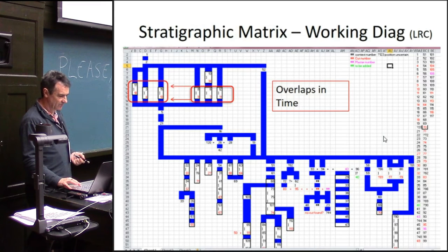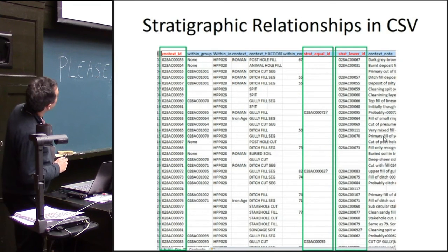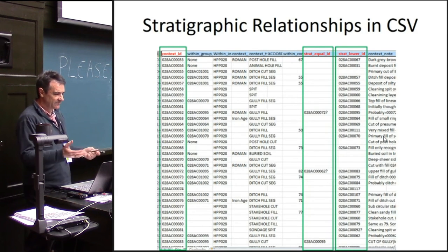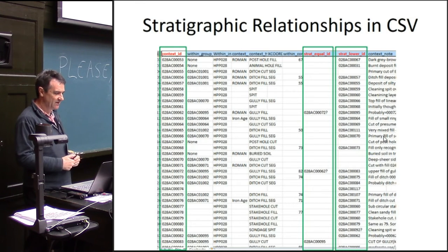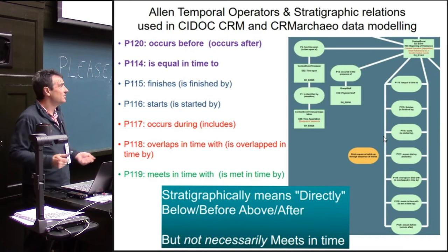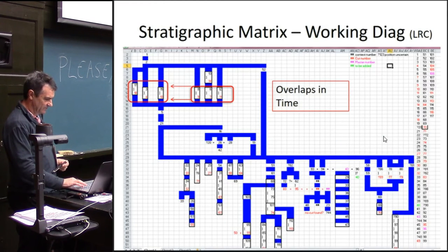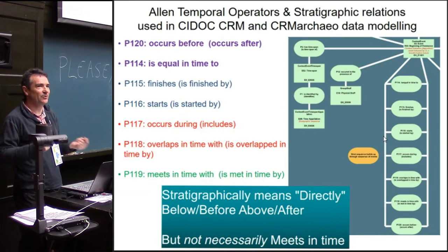There's a similar example that shows there is no standardised way of really expressing this — a lot of people do it in different ways, and these are all in Excel sheets. What ends up in the data, if you're lucky, are these kind of data relationships in the database: the context IDs, the fact that one equals another stratigraphically, and the strat-low relationship showing above-below. And that's pretty much it — in a lot of cases you don't even get that. We find that they're only actually archived as pictures, so something like this might just be held as a PDF of the big matrix. So you've got no data to reuse at all.